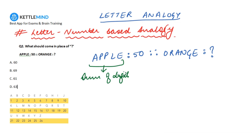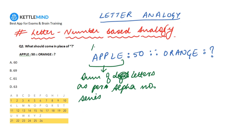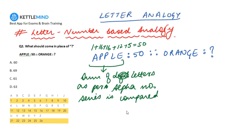If we take the sum of letters of 'apple' as per the alphanumeric series: A is 1, P is 16, P is 16 again, L is 12, and E is 5 — making it equal to 50, which is exactly what it has been compared to in the analogy. So the pattern is confirmed: the sum of letters as per the alphanumeric series is compared to the number. Now we can evaluate the other half of the analogy, which is 'orange'.